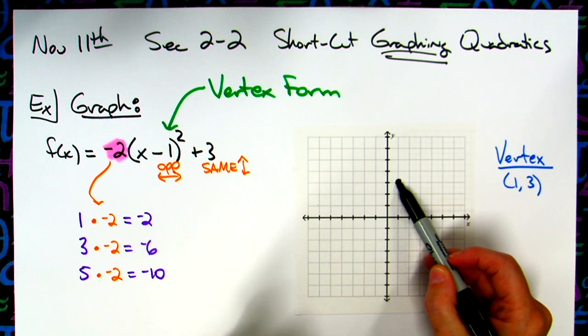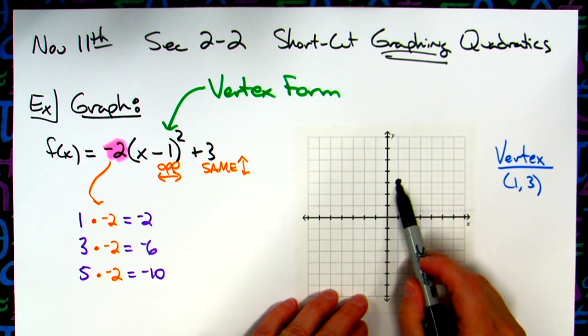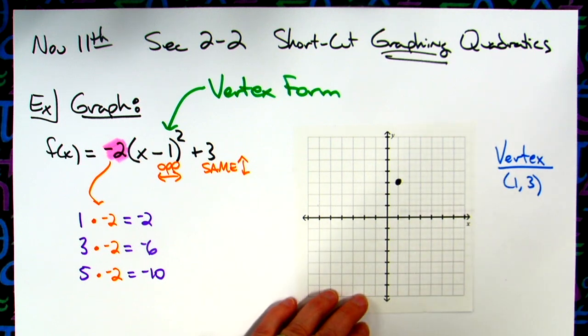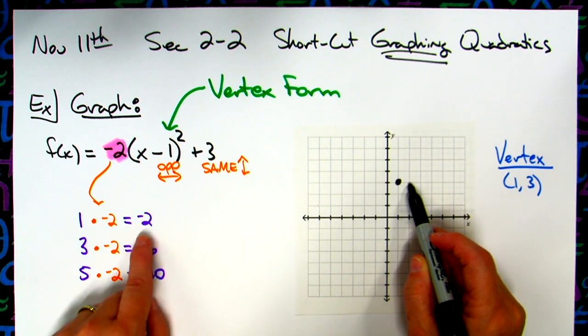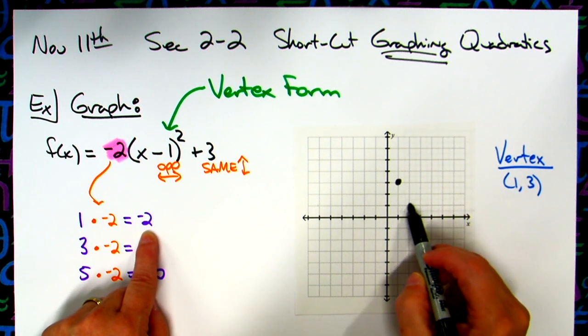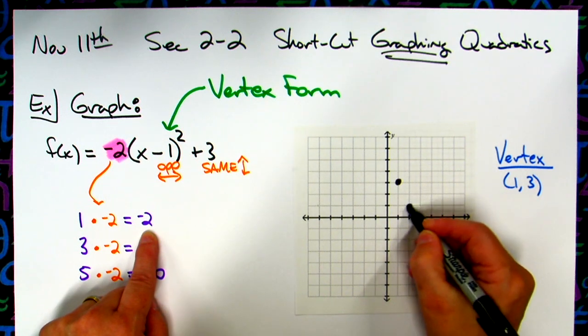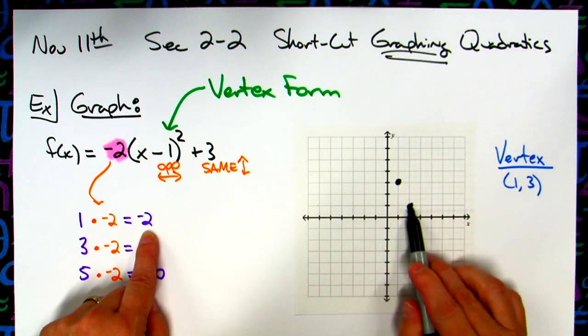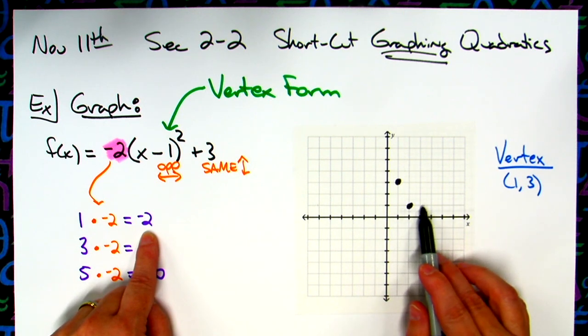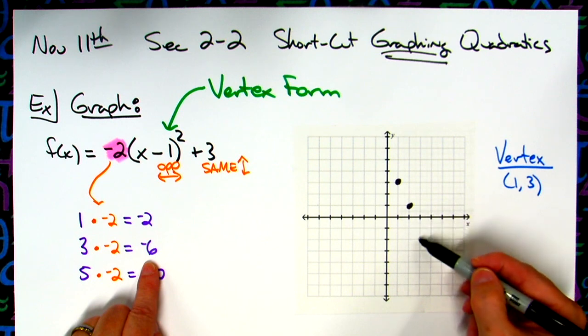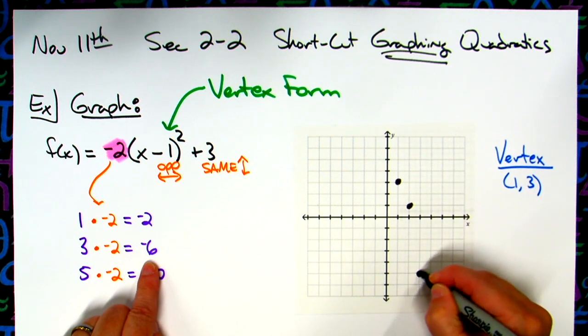So I'm going to start at my vertex. I am always going to move either right or left. I'm going to go to the right and do all the right points first. I'm going to go to the right one. Notice I don't move my pencil. And then I'm going to go down two. One, two, and put a point. Then I'm going to keep my pencil right there. I'm going to go to the right one. And then down six. One, two, three, four, five, six.